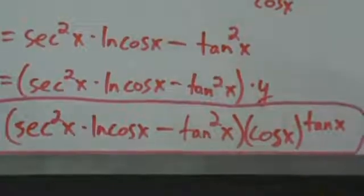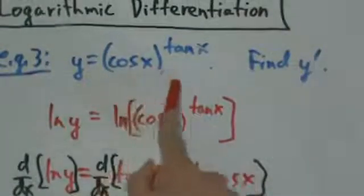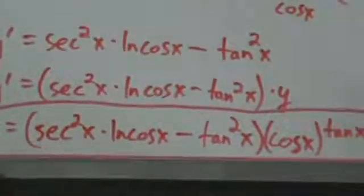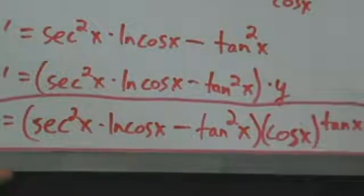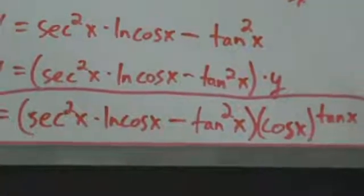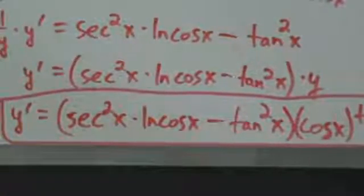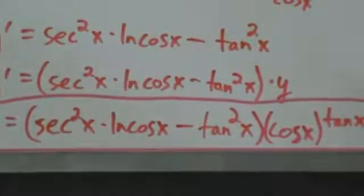So secant squared of x times ln cosine of x minus tangent squared of x, all multiplied by cosine of x to the tangent of x. We started with a function that's kind of goofy but not too complicated, and its derivative is this nastier expression — which isn't really too bad, but it looks a lot more complicated than the original function. That's pretty much what happens with logarithmic differentiation. So that's example three.